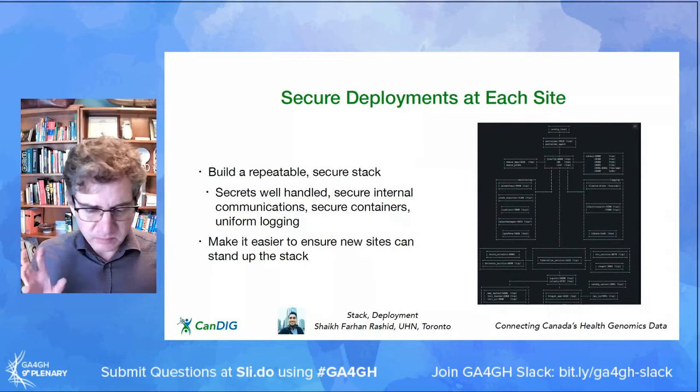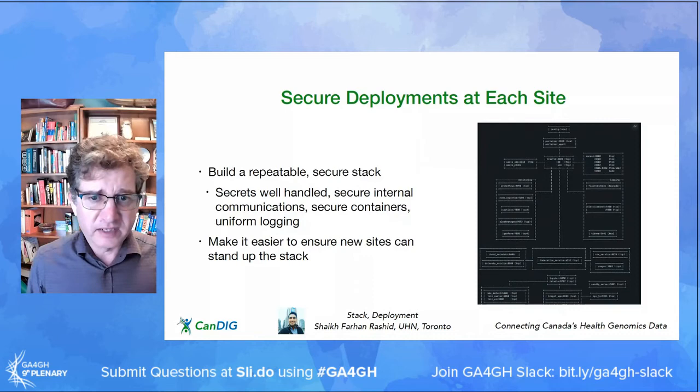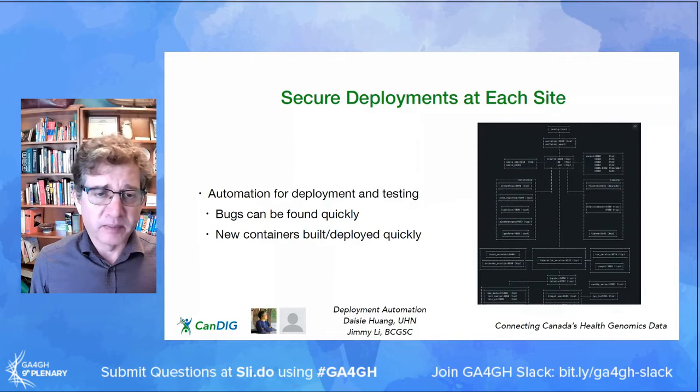We want to make it as easy as possible to have secure deployments at each site for this new version — a repeatable secure stack where security-relevant decisions are made sensibly and it's as easy as possible for new sites to stand it up. And automation for deployment and testing so bugs can be found and fixes can be deployed quickly.